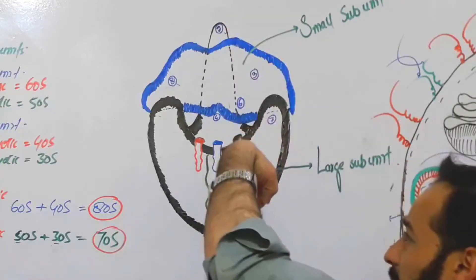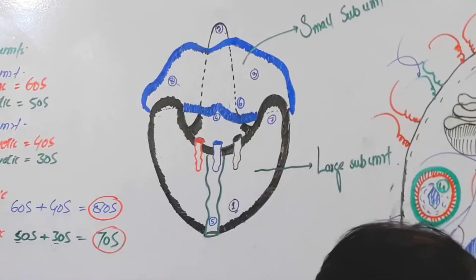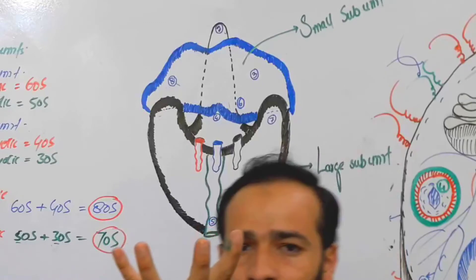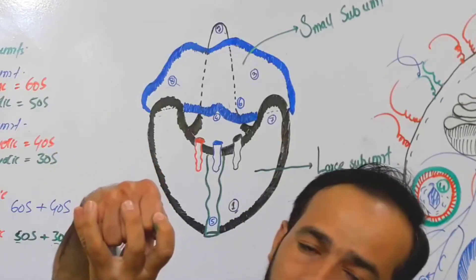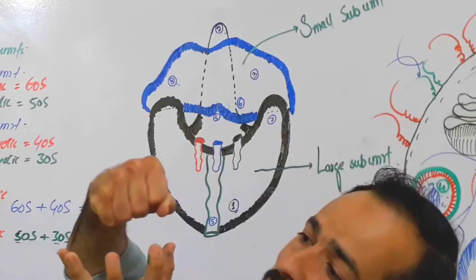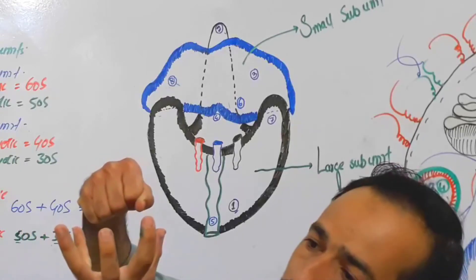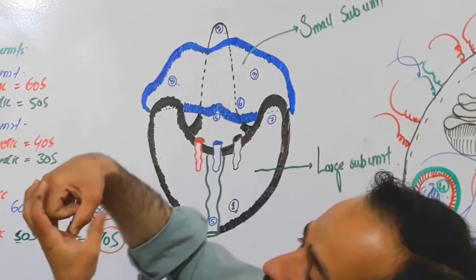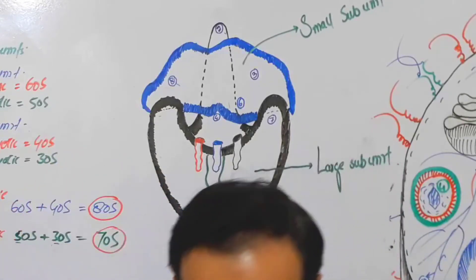The small sub-unit fits into the large sub-unit. They make close contact with each other — I will tell you later what holds them together. There is a little space in between these two units where protein synthesis takes place, which we will see later.